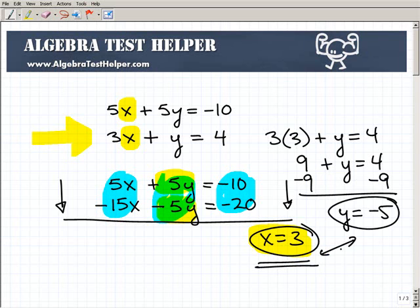I just solved the system using the elimination method. My coordinate or my solution, the point where these two lines intersect, which is the solution, is x is 3 and y is negative 5. So that's a pretty cool method, elimination, linear combination method. It's just as good as the substitution. And you want to know both, because there will be times where it's easier to solve a system one way or another. So hopefully this video helps you out. Please come by our site, algebratesthelper.com, for many more videos and other awesome tutorials, all designed to make math easy to learn. All right, so take care and good luck.